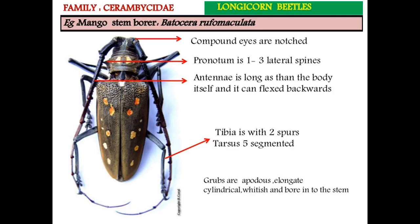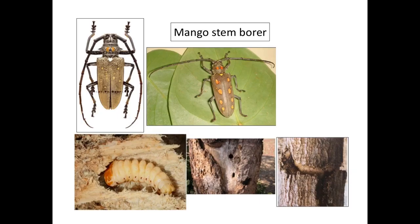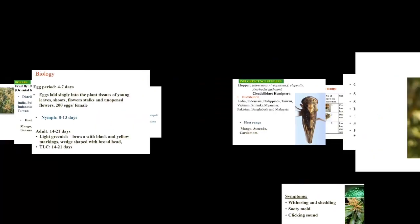Coming to stem borer — Batocera rufomaculata, family Cerambycidae, order Coleoptera — otherwise called longhorn beetle. Compound eyes are notched; pronotum has one to three lateral spines; antennae are longer than the body. Grubs are apodous, elongated, cylindrical, whitish, and bore into the stem. The grubs feed by tunneling the bark and main stem; shedding of leaves and drying of terminal shoots occur in early stages. Damage to the main stem can cause tree death. Frass with excreta is seen at the infestation site.